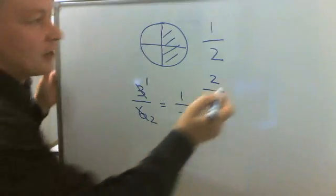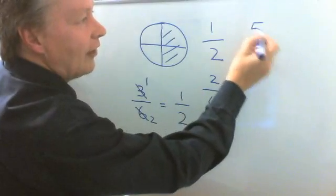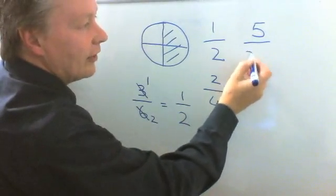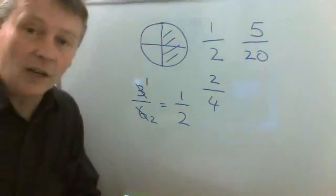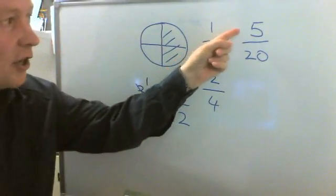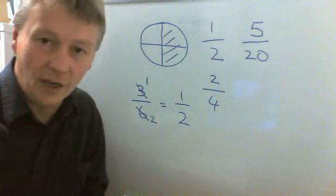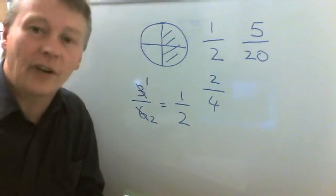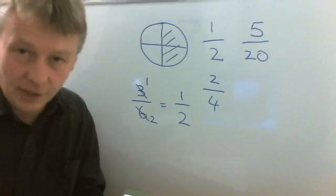Let's say that I have a fraction which is five out of 20. So what number can I divide the top and the bottom by in order to make my fraction smaller and easier to manage?